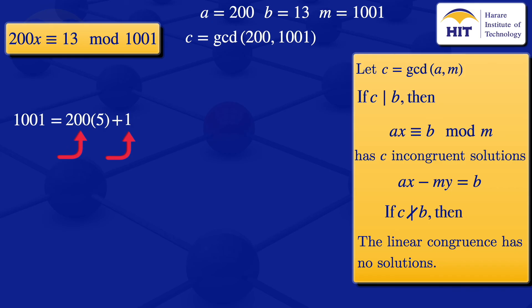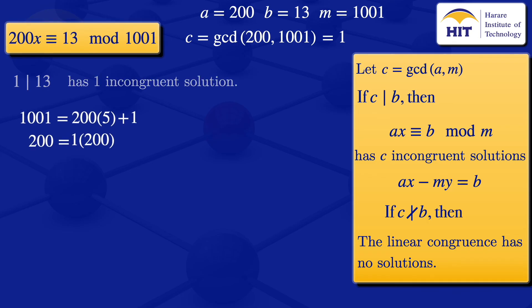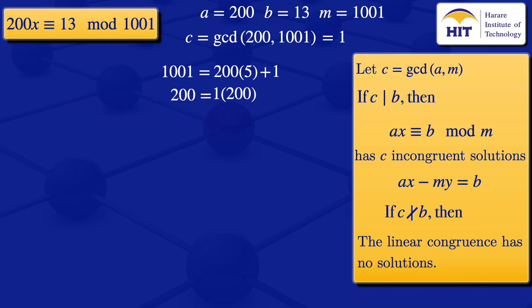Continuing: 200 = 1 × 200 + 0, since the floor of 200/1 is 200 and the remainder is 0. The last non-zero remainder is 1, so gcd(200, 1001) = c = 1. We check if c divides b: does 1 divide 13? Yes. So there is one incongruent solution.